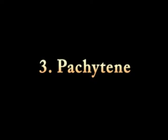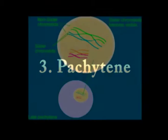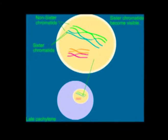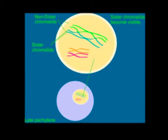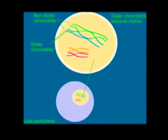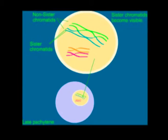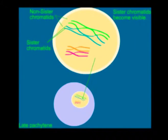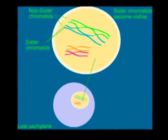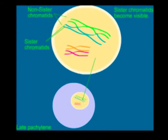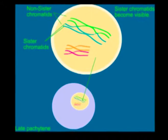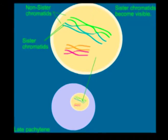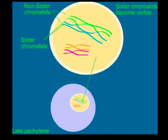Pachytene: As soon as synapsis is complete all along the chromosomes, the cells are said to have entered the pachytene stage of prophase, where they may remain for days.